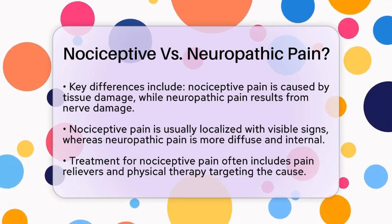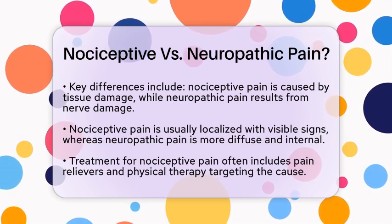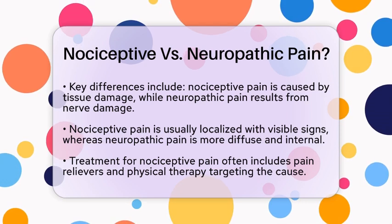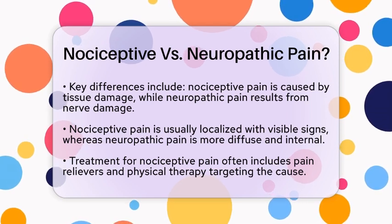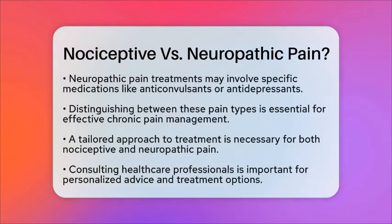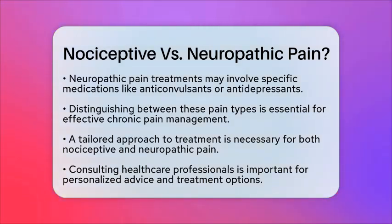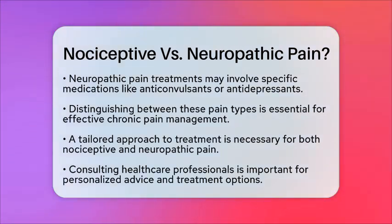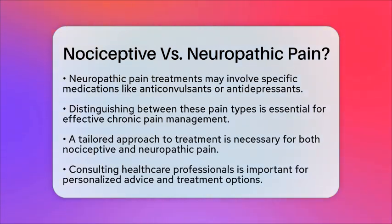These can include anticonvulsants or antidepressants that help stabilize nerve function and reduce symptoms. In chronic pain management, distinguishing between nociceptive and neuropathic pain is crucial for developing effective treatment plans. For nociceptive pain, it is essential to address the underlying cause, such as inflammation or injury. For neuropathic pain, treatments focus on stabilizing nerve function and alleviating symptoms. A comprehensive approach may include medication, physical therapy, and lifestyle changes tailored to the specific type of pain.